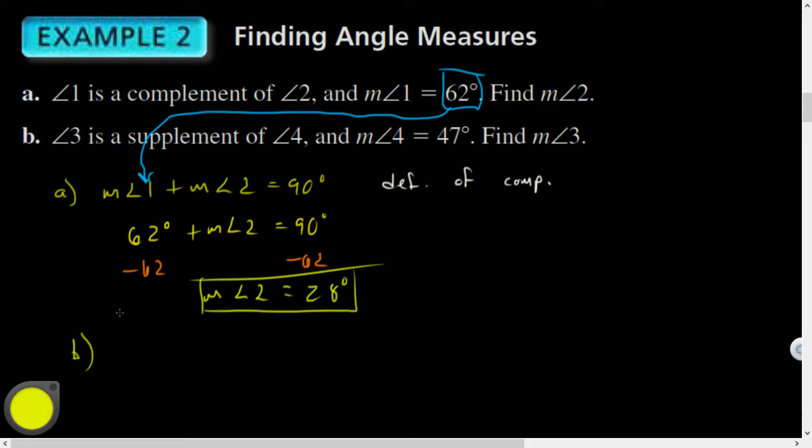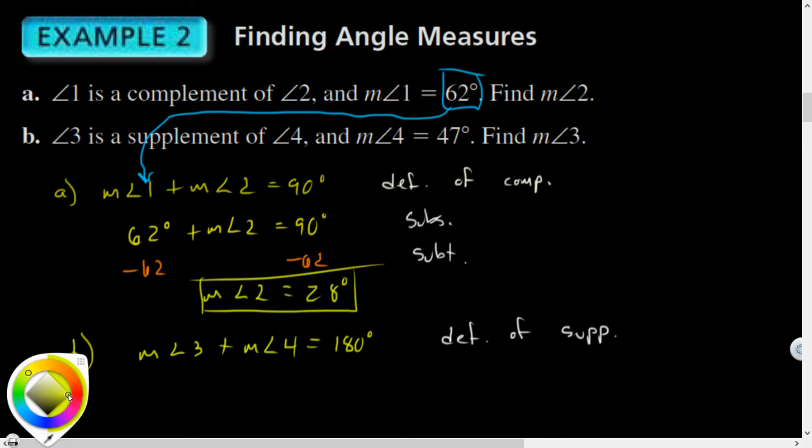Similarly, by definition of supplementary, I could say measure angle 3 plus measure angle 4 equals 180. The reason that is true is def of sup. Also here, this was substitution property. This was subtraction property of equality. Just to get you familiar with the idea of using some of these properties. And if measure of angle 4 is equal to 47, that means I can plug this in using substitution.